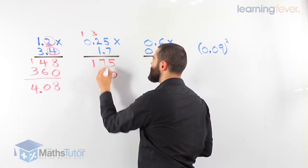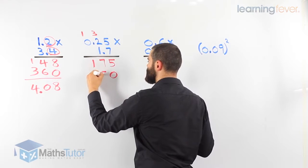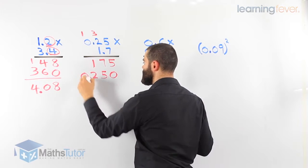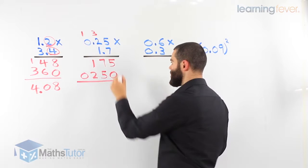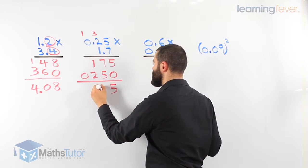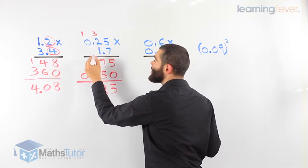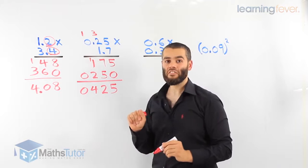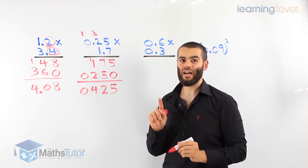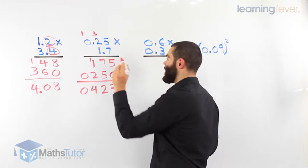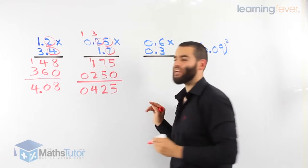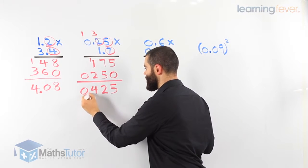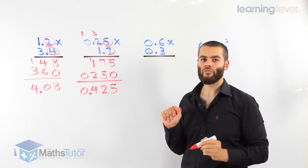Then we put our magic zero because we're going to the next number. 1 times 5 is 5. 1 times 2 is 2. And 1 times 0 is 0. Now we add them up. 5 plus 0 is 5. 7 plus 5 is 12, carry the 1. 1 plus 1 is 2, plus 2 is 4. Our answer is 0.452 — there are 3 decimal places in the question, so 3 decimal places in the answer.